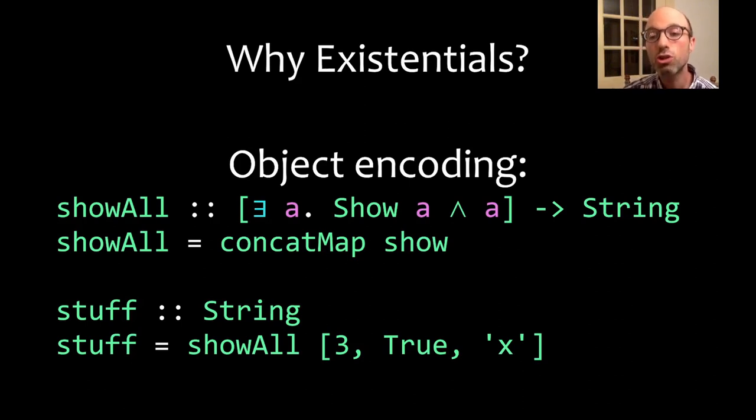Then I can use showAll on what appears to be a heterogeneous list. This 3, True, and x - it's not really heterogeneous because actually each one of these has this existential type because each one has a Show instance.